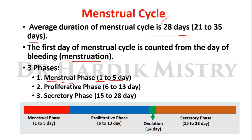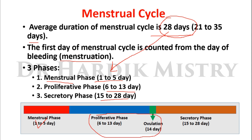Considering 28 days as a normal menstrual cycle: the menstrual phase is day 1 to 5, the proliferative phase is day 6 to 13, and the secretory phase is day 15 to 28. In the ovarian cycle, day 14 is when ovulation occurs, so day 14 is included within the proliferative phase of the menstrual cycle.